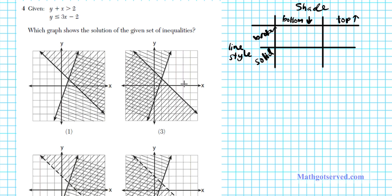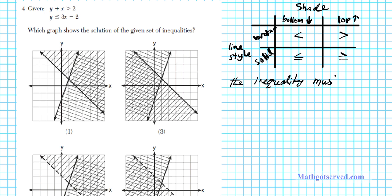If a line is broken, in inequality notation that means the line is excluded from the solution region — so shading the bottom with a broken line is less than; shading the bottom with a solid line is less than or equal to; shading the top with a broken line is greater than; and shading the top with a solid line is greater than or equal to. This is applicable only to inequalities in slope-intercept form — the inequality must be in the form y less than, less than or equal to, greater than, or greater than or equal to mx plus b.